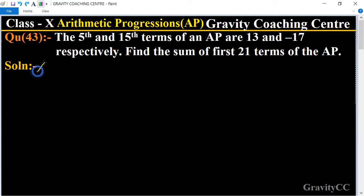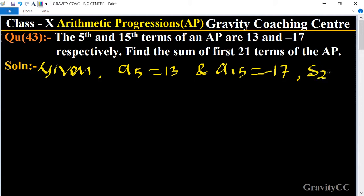Given that the fifth term a₅ = 13 and a₁₅ = -17. Find S₂₁. Here a₅ = 13 means a + 4d = 13. Suppose this equation is the first one.